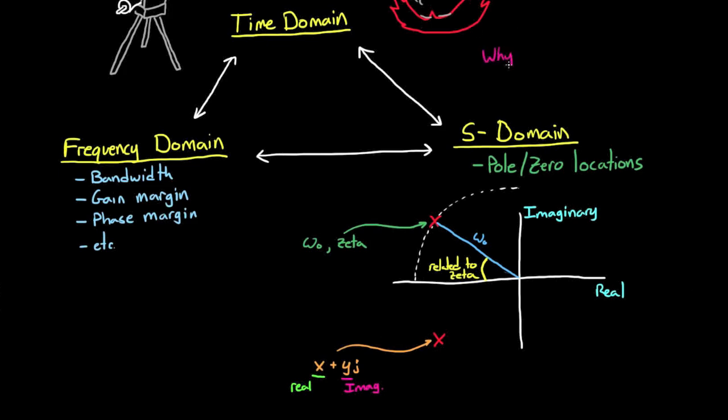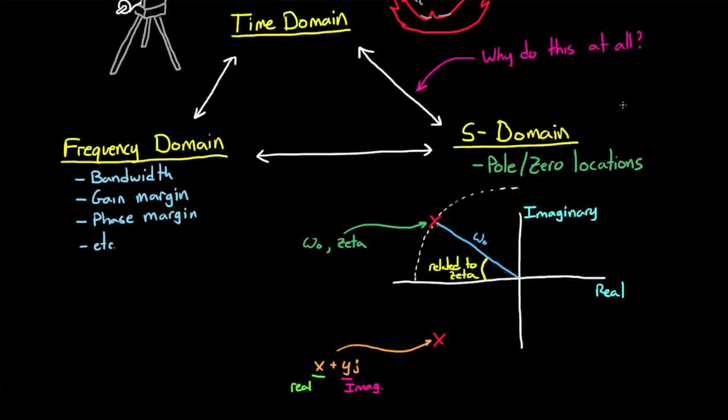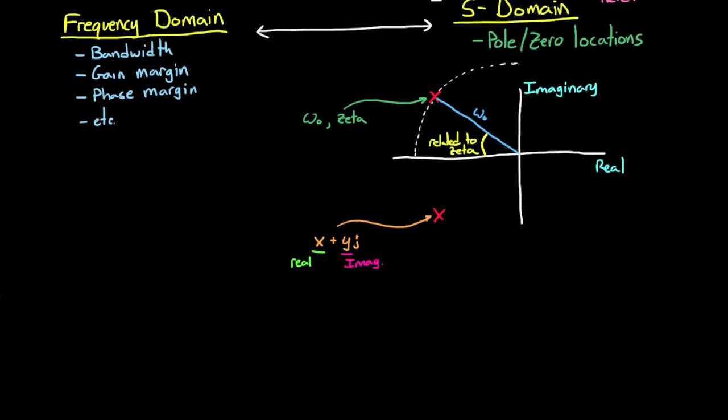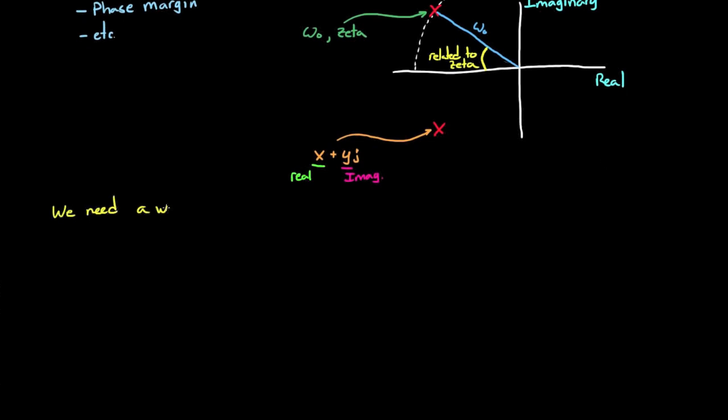Before we talk about that, let's talk about how we define the locations of poles and zeros. We can define them in rectangular coordinates as the real and imaginary component, or we can define them in polar coordinates as the damping ratio and the natural frequency, where the damping ratio is related to that angle of the line off the negative real axis. At this point the question you might have is why give requirements in the s-domain at all? As long as the system behaves as you want in the time domain, who cares where the poles and zeros are?